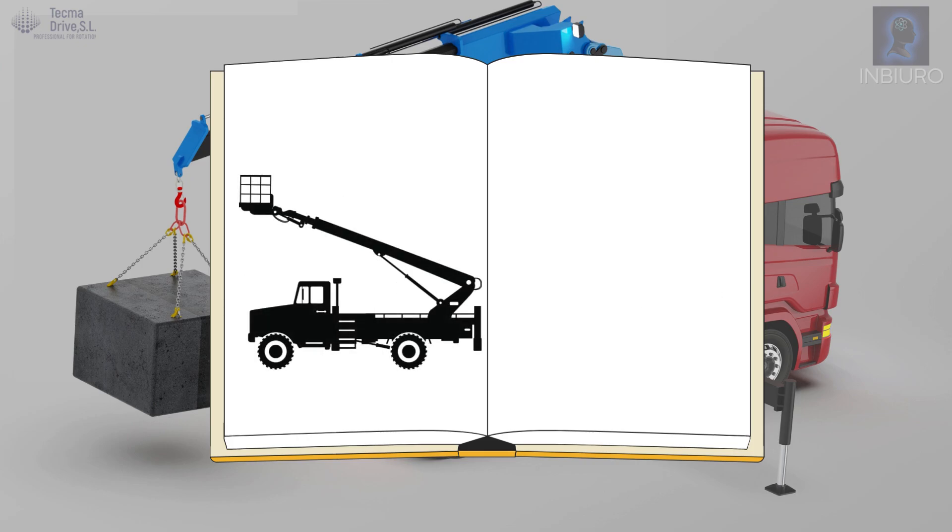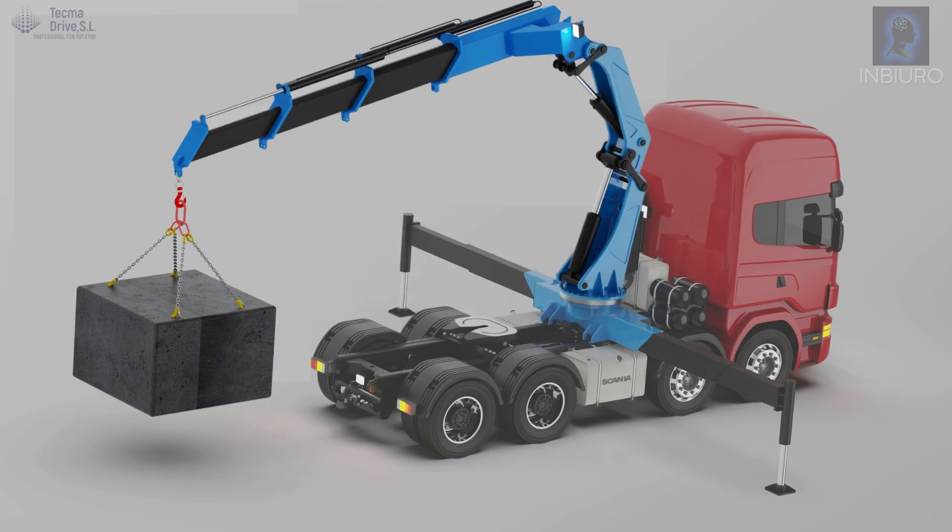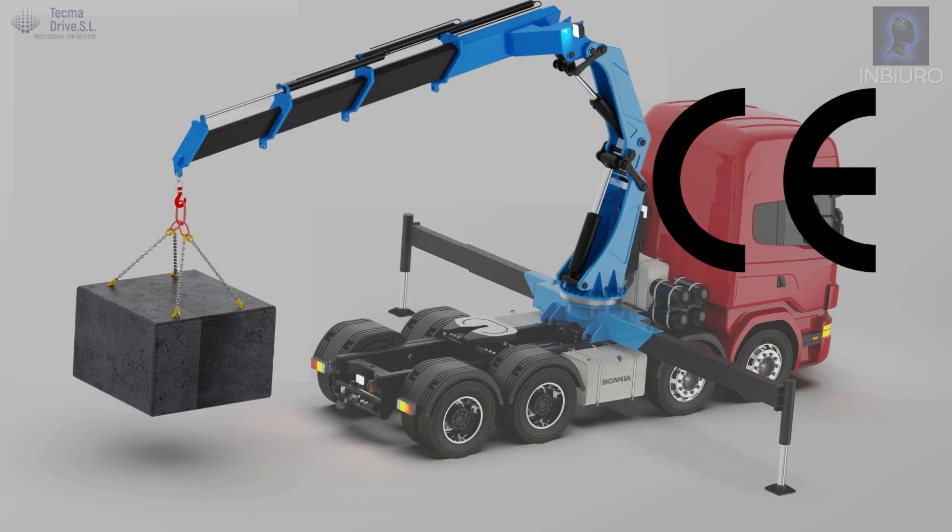For aerial work platforms, you will find details in the EN 280 standard. They are both C-type standards, which means they provide presumption of conformity with the machinery directive.